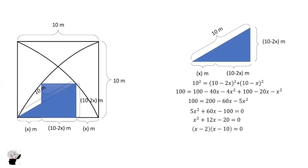Now, from here, the factors are (x - 2)(x - 10) equals 0. So x is 2 and x equals 10.